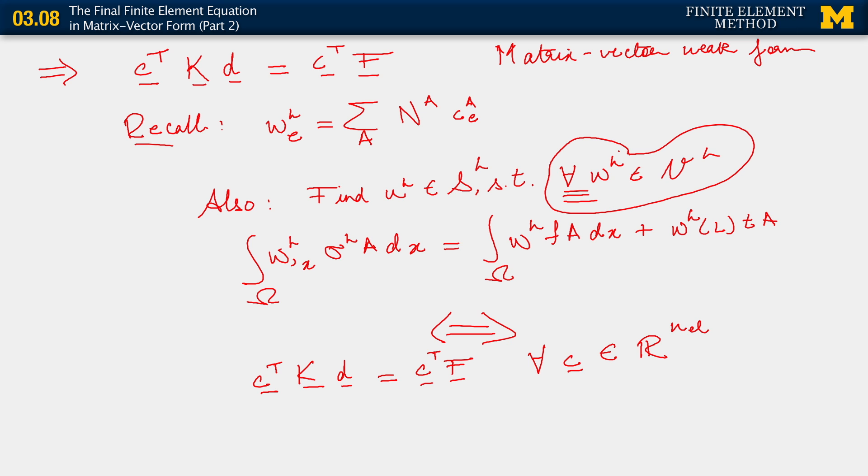It is when we specify that our matrix-vector weak form must hold for all C that we are essentially imposing the same requirement as we do here. Why is this? It is because the C's are just degrees of freedom which interpolate the weighting functions. If our weak form has to hold for all weighting functions belonging to V_h, we've already fixed the functional form of V_h by choosing particular polynomial basis functions. That degree of arbitrariness, which must still hold within the space V_h, is ensured if we require that the matrix-vector weak form holds for all C belonging to this NEL dimensional space.